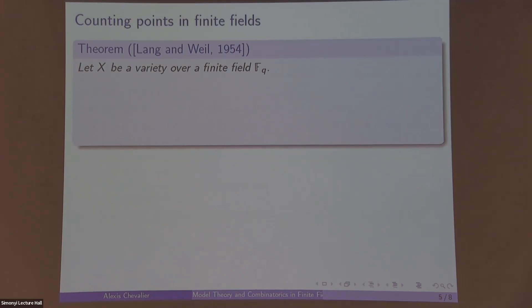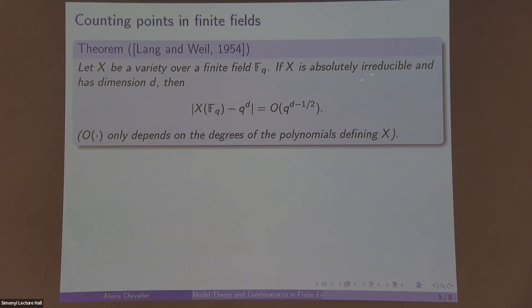First, to recall classical results from Lang and Weil: Let X be a variety over a finite field F_q. Then if X is absolutely irreducible and has dimension d, then the number of points in X is approximately q^d with error rate q^(d-1/2). And here O only depends on the degrees of the polynomials defining X.